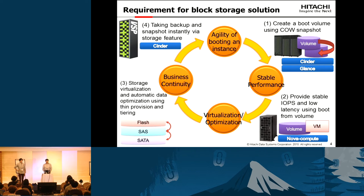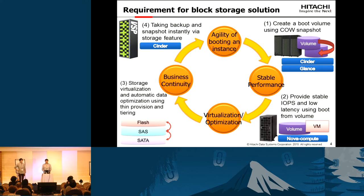Currently, when we boot a VM with a volume, the image is first copied from Glance to the Cinder volume via network. So it takes a long time and also causes high network traffic. Therefore, we improved this problem in the Liberty phase. As for stable performance, applying OpenStack to the mission-critical system, stable IOPS and low latency for storage is required, so block storage is suitable for this requirement.